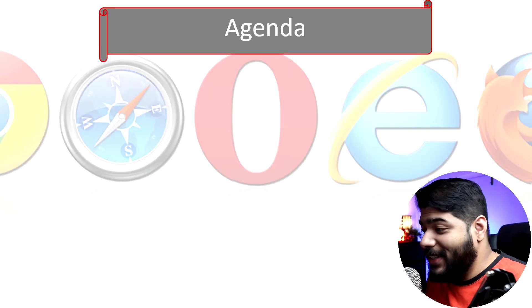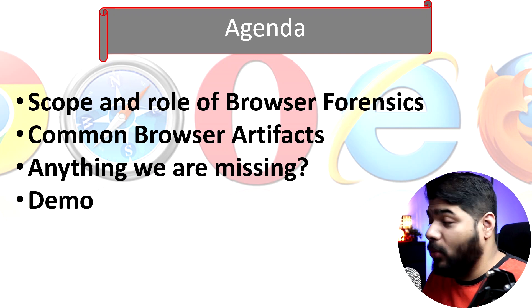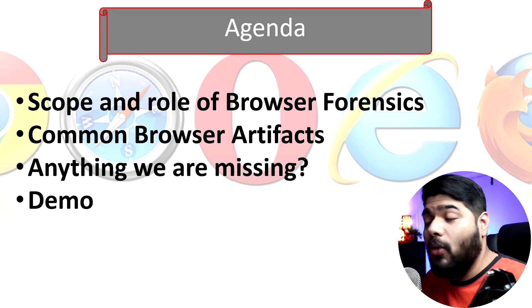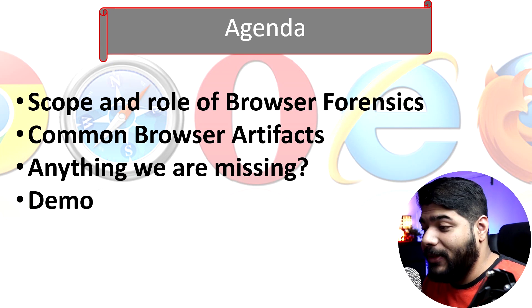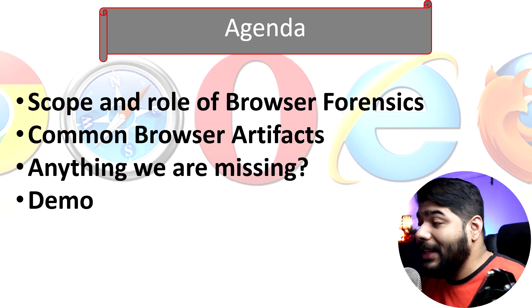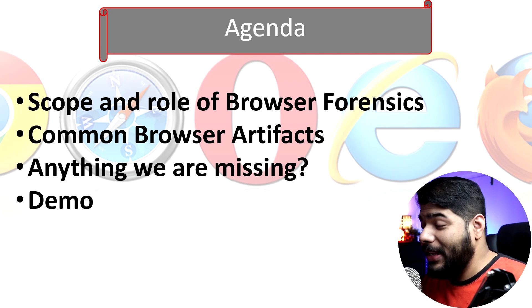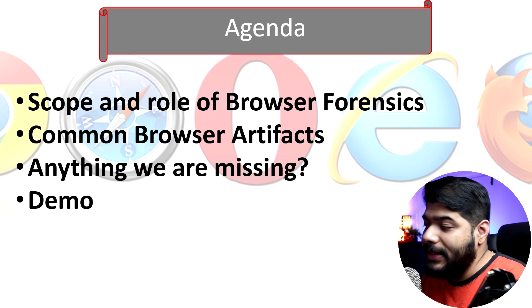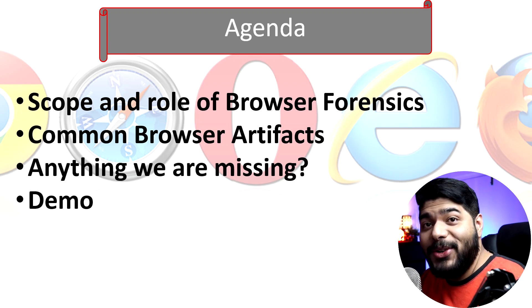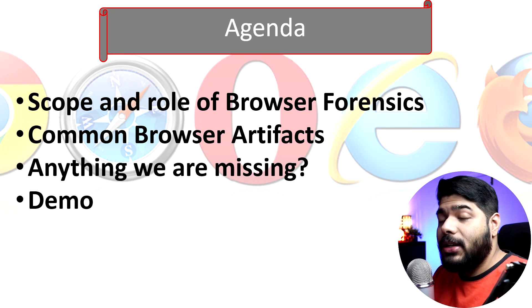Our agenda for today's episode: we will start with the scope and role of browser forensics — when it is needed and why it is needed. Then we will go for common browser artifacts, meaning when someone wants to investigate any kind of browser, what specific things they need to look for. Third, we will try to identify if anything we are missing from conventional forensics approaches. And lastly, we will see a quick demo.